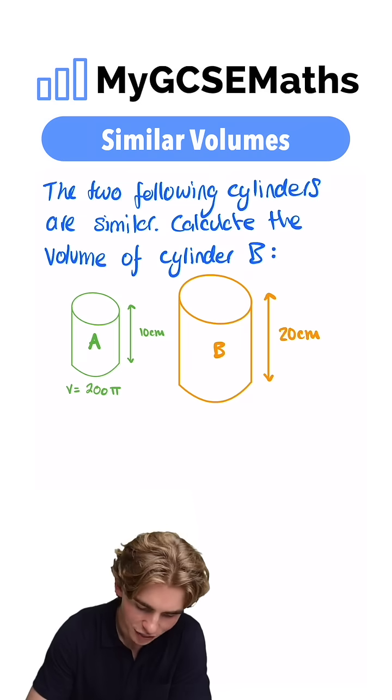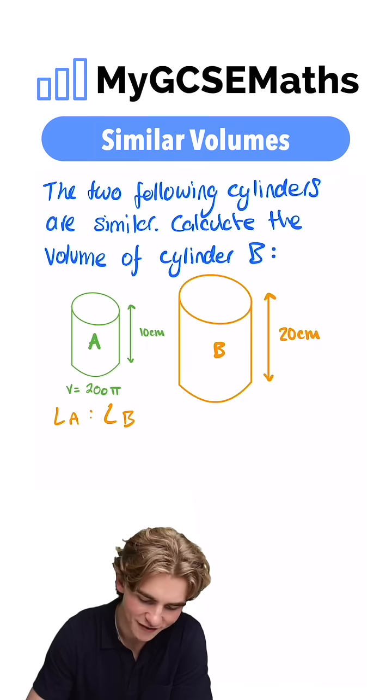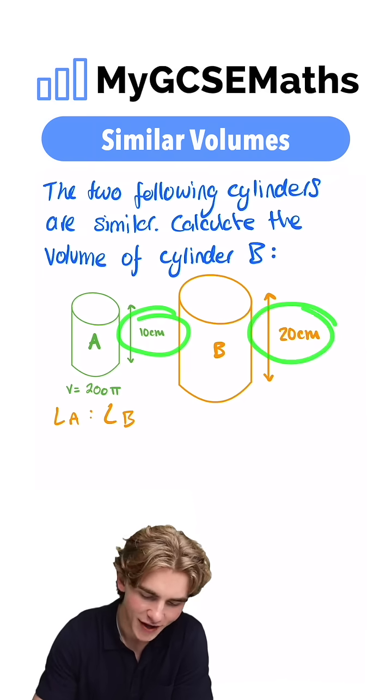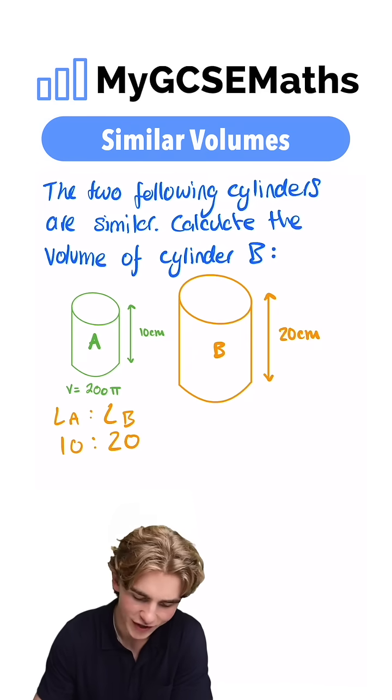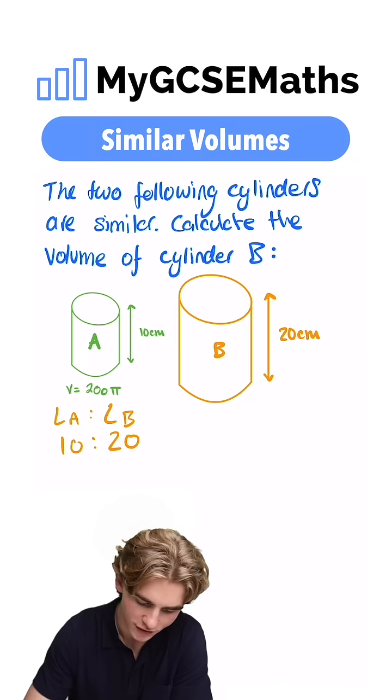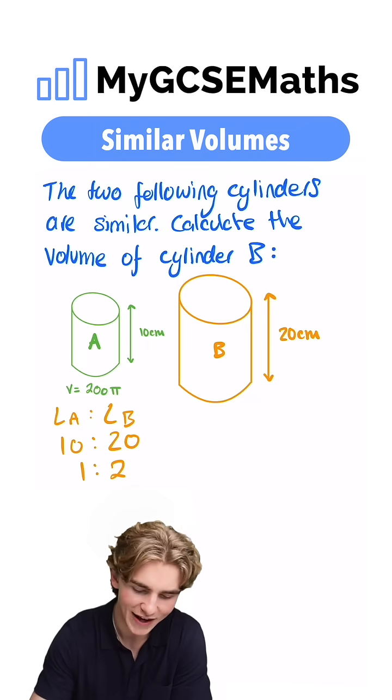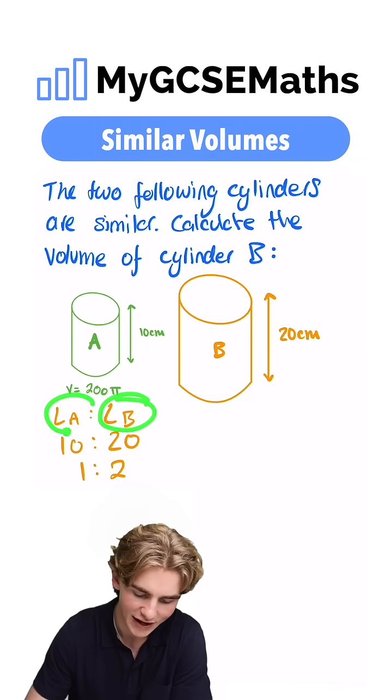So the ratio of the length of A to the length of B, what's it going to be? Well, the height of A is 10, the height of B is 20. So we can say it is 10 to 20. And we can simplify this ratio dividing both sides by 10. We're going to get 1 to 2. So we know that the lengths in shape B are double the lengths in shape A.